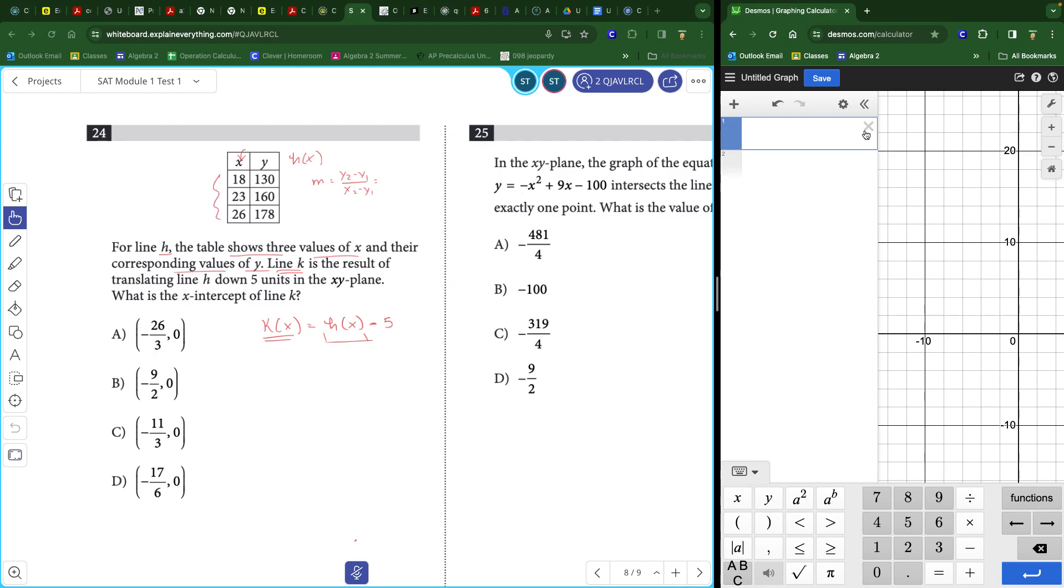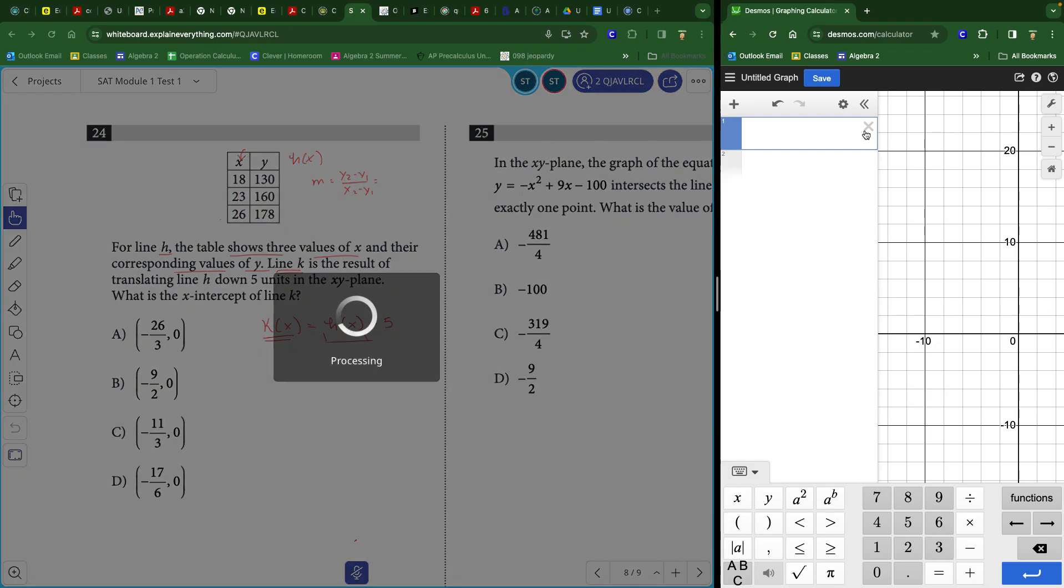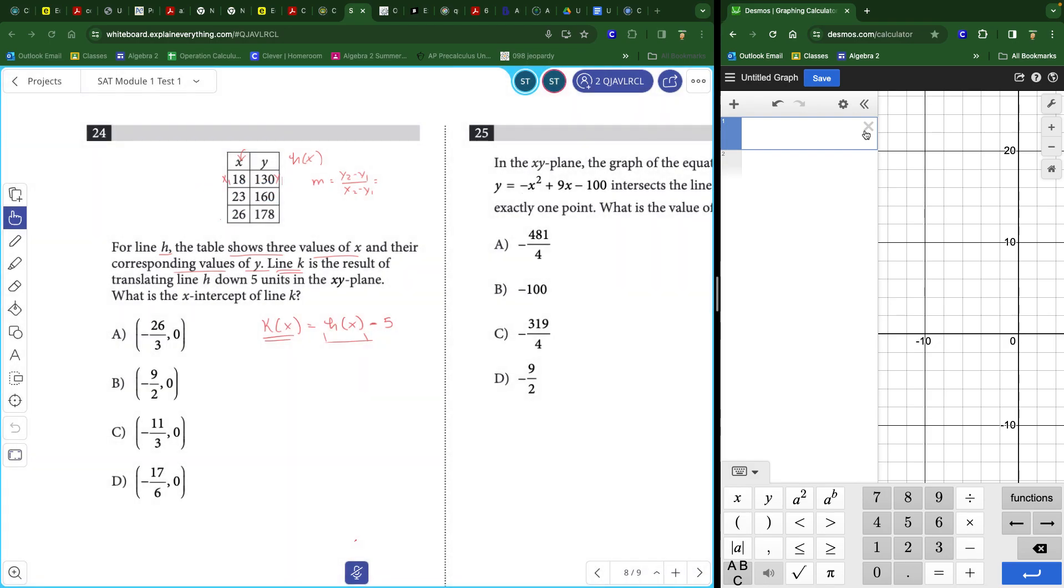So these points here, if I want to kind of set it up so you can see it, this would be like my x1 and y1 and this would be x2 and y2. And so I could go 160 minus 130 over 23 minus 18, giving me 30 over 5, or a slope of 6. I'm also going to do it though with this other pair. I'll call it this time, this one y2 and this one y1 and this x2 and this one x1. So that slope would be 178 minus 160 over 26 minus 23. And it gives me 18 over 3, which also gives me 6.